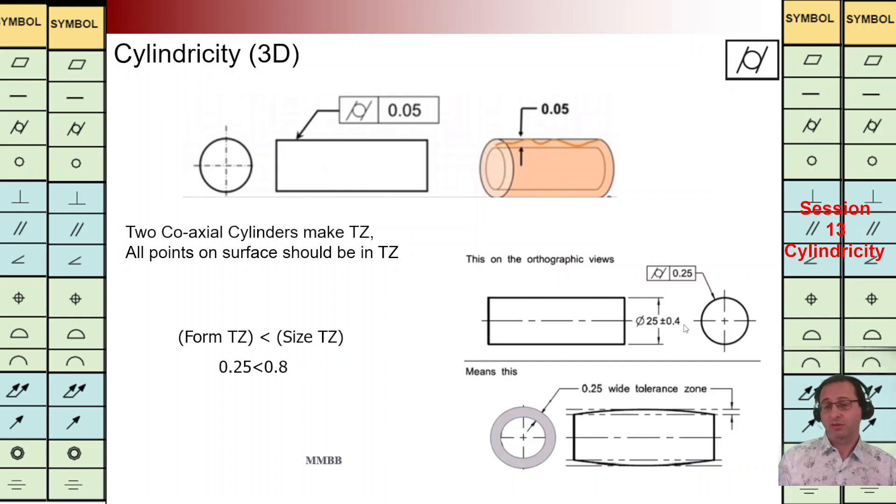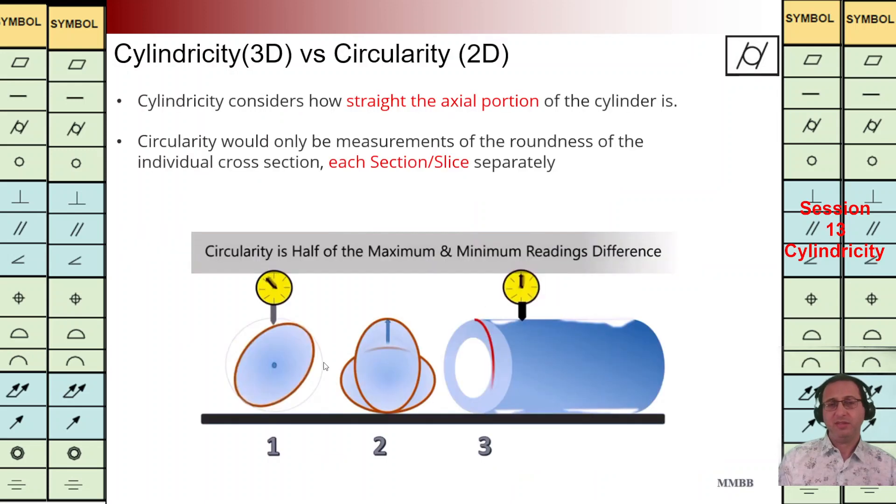We can say cylindricity is a 3D version of circularity. In circularity, we are going to check the roundness of each cross section individually, but in cylindricity we are going to check roundness and also straightness of that cylinder. Whenever we are going to check the cylindricity...